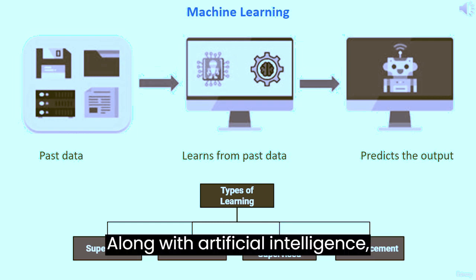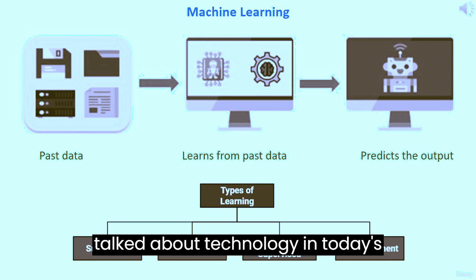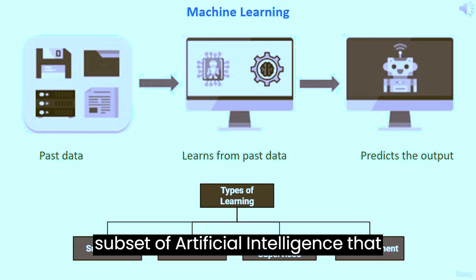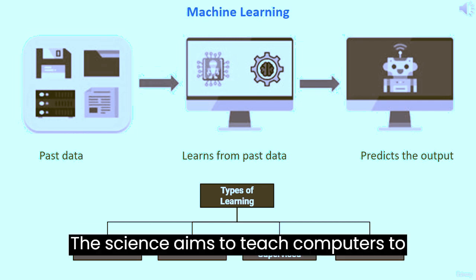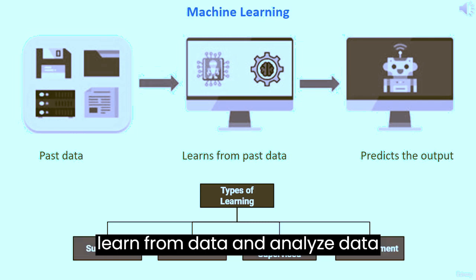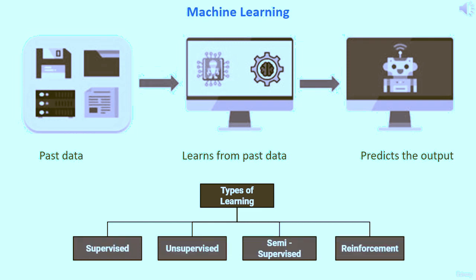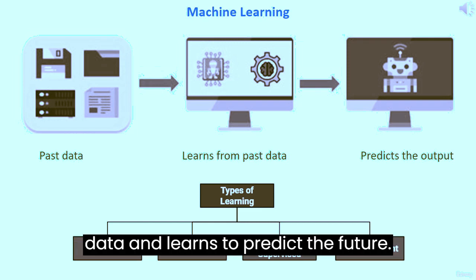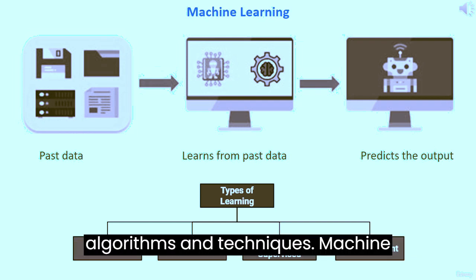Along with artificial intelligence, machine learning has become the most talked-about technology in today's commercial world. Machine learning is a subset of artificial intelligence that helps you build AI-driven applications. The science aims to teach computers to learn from data and analyze data automatically without human intervention. Machine learning accesses vast amounts of data and learns to predict the future, learning from the data by using multiple algorithms and techniques.